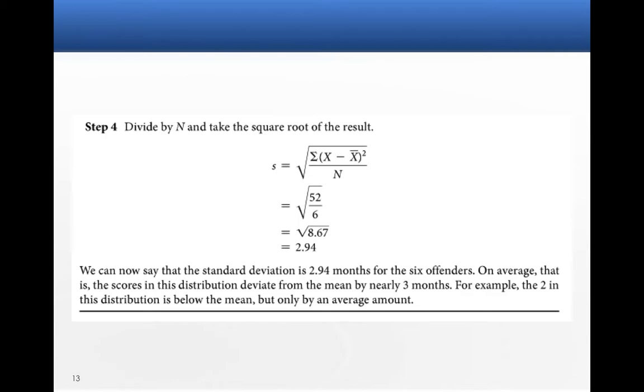So the standard deviation is 2.94 months for the 6 offenders. That means, on average, the scores in the distribution deviate from the mean by about 3 months. So the 2 in the distribution is below the mean, but by an average amount. Let that just kind of sink in for a little bit.